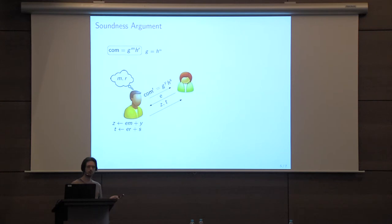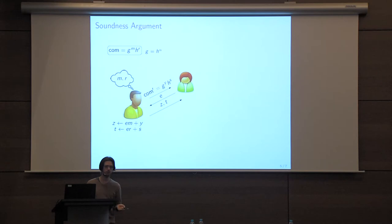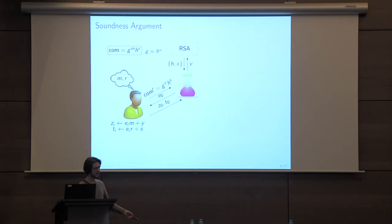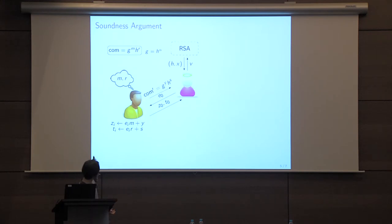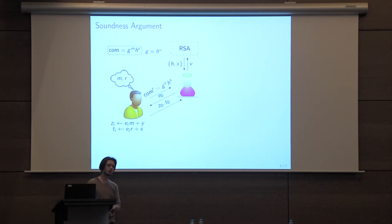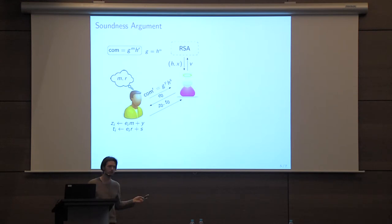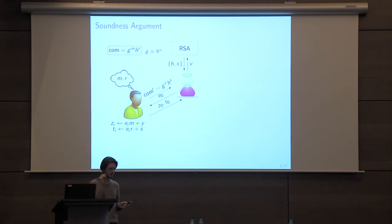Instead of proving unconditionally that this protocol is sound, we prove that soundness holds computationally. We replace our verifier with a simulator whose goal is either to extract a valid witness in an interaction with the malicious prover, or to solve an RSA challenge from some RSA oracle. If we can do one of the two, then we can prove that the soundness of the protocol relies on the RSA assumption.